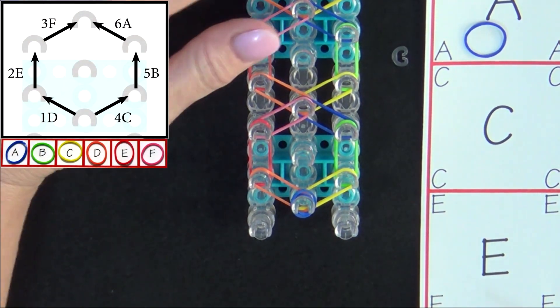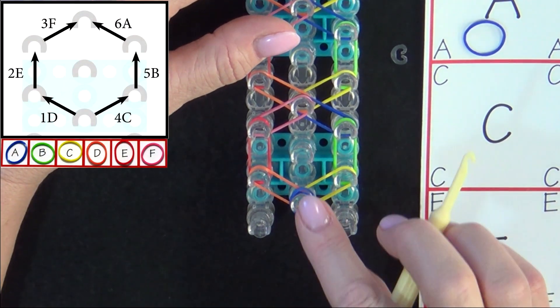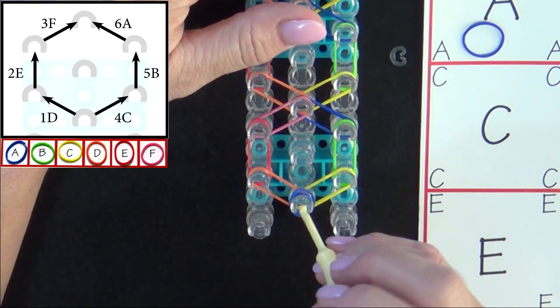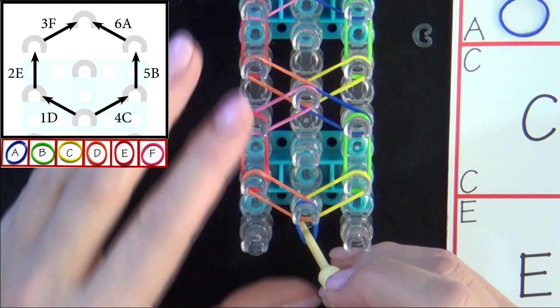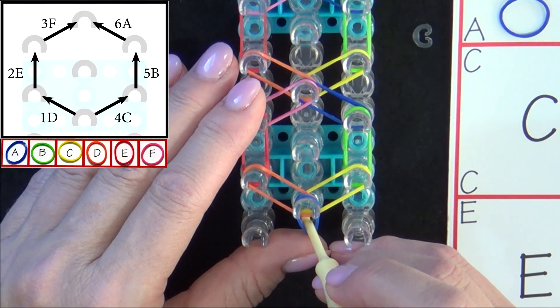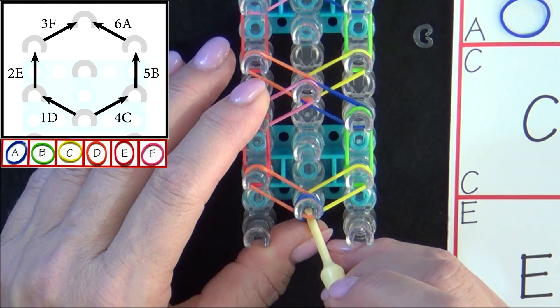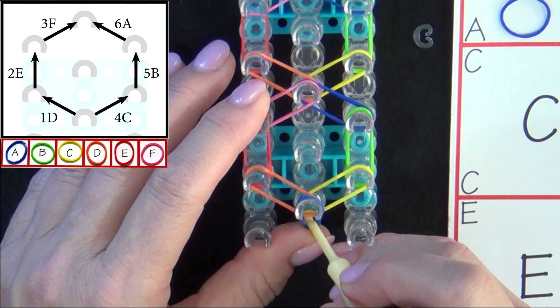Refer to the graphic on your screen as we loop the first 6 bands. We'll start from the middle pin and you'll pull back the cap band with your hook. You'll reach in and grab the top band on that pin and you will be looping band 1D.